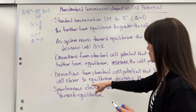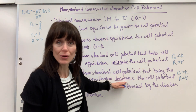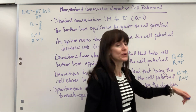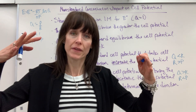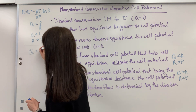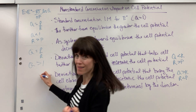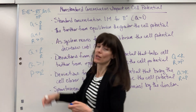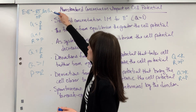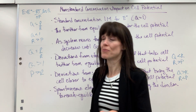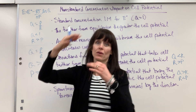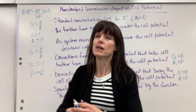Now the opposite: deviations that bring the cell closer to equilibrium decrease the cell potential. Q is greater than K, which means products are greater than reactants. In the Nernst equation, Q is products over reactants. If Q is greater than one, the natural log of a number greater than one is positive. Positive times negative gives a negative value, so standard potential minus a number gives a smaller potential.